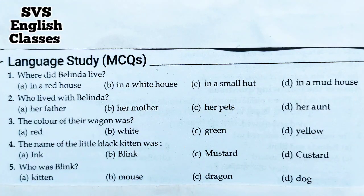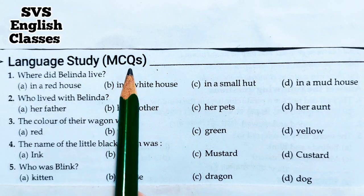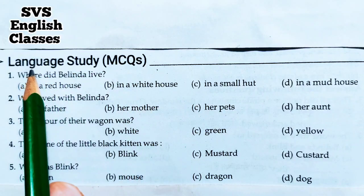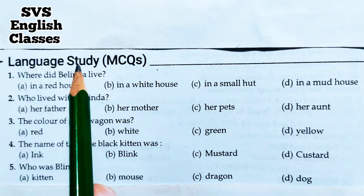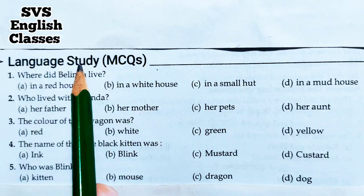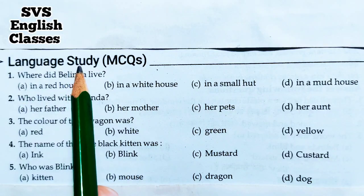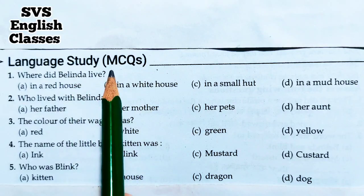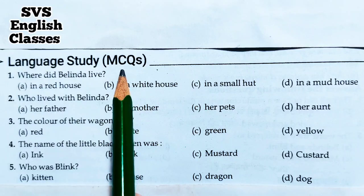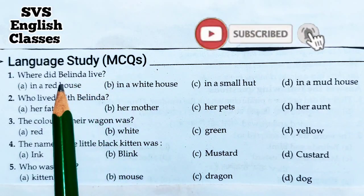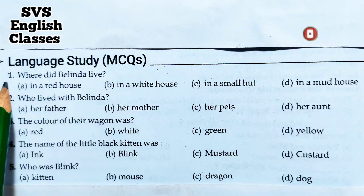Hello students, welcome to SVS. In this class we are here to study MCQs - multiple choice questions under the direction language study from the poem 'The Tale of Custard the Dragon' composed by Ogden Nash. These multiple choice questions are also called 'tick the correct option'. So let's study.